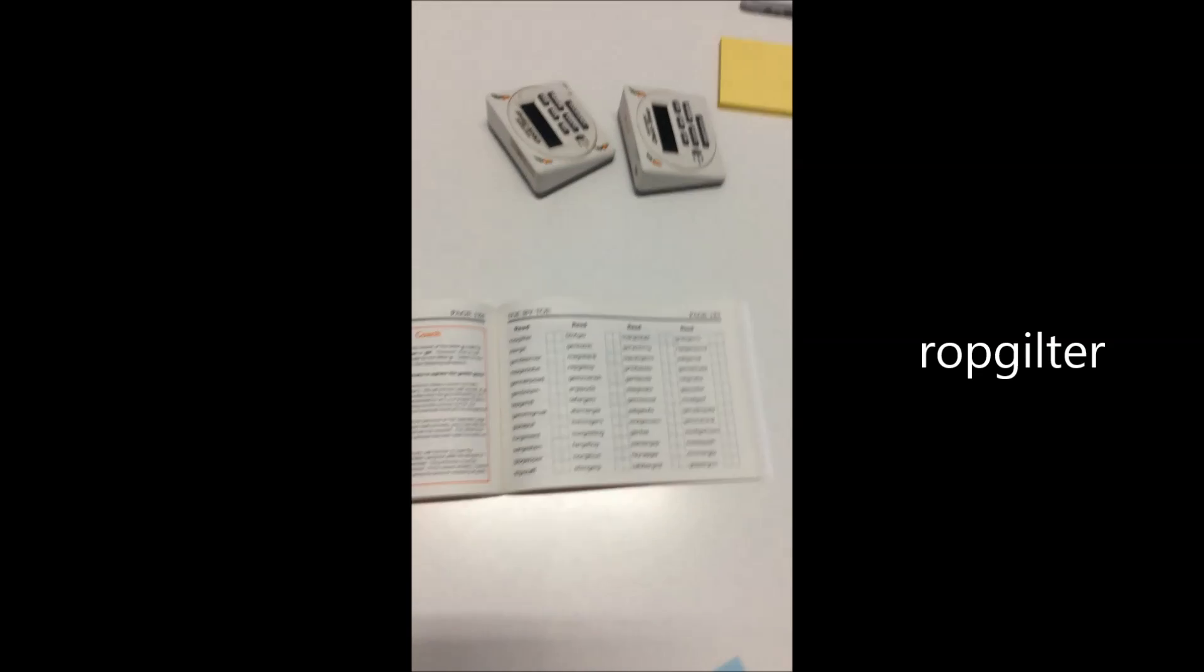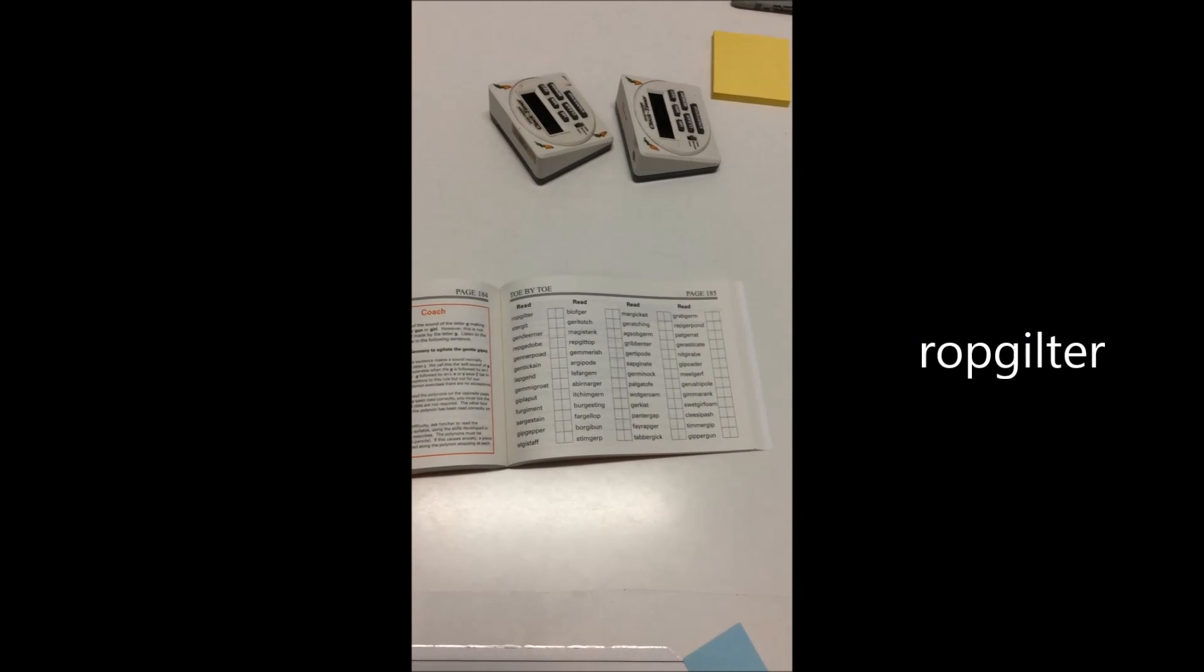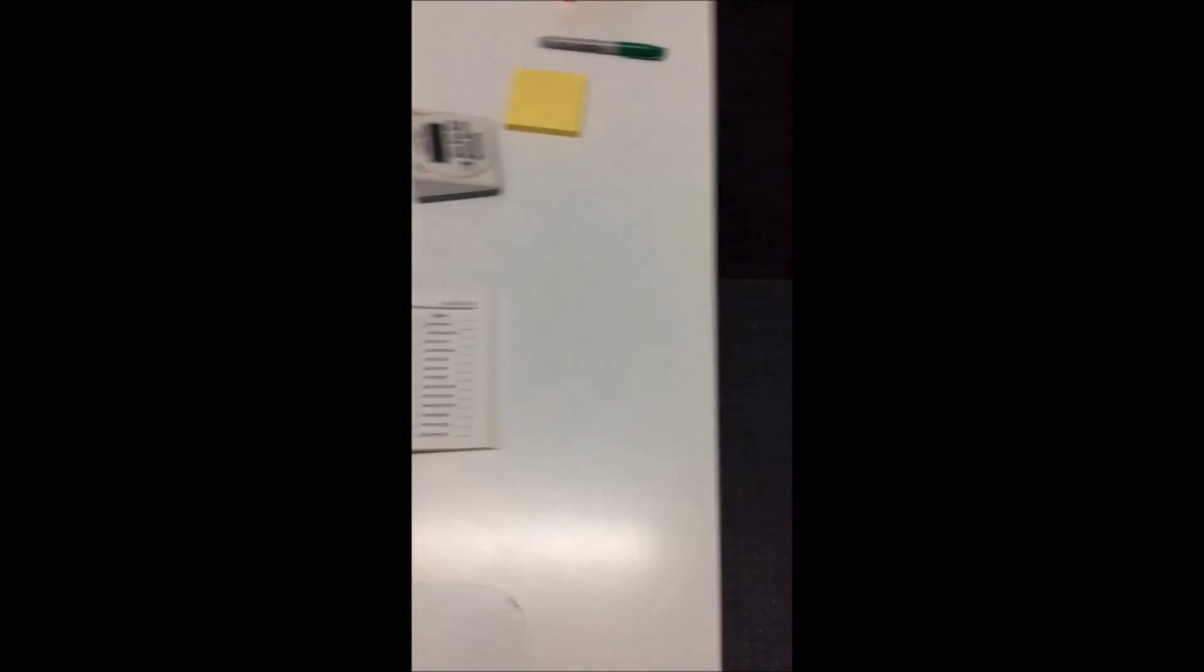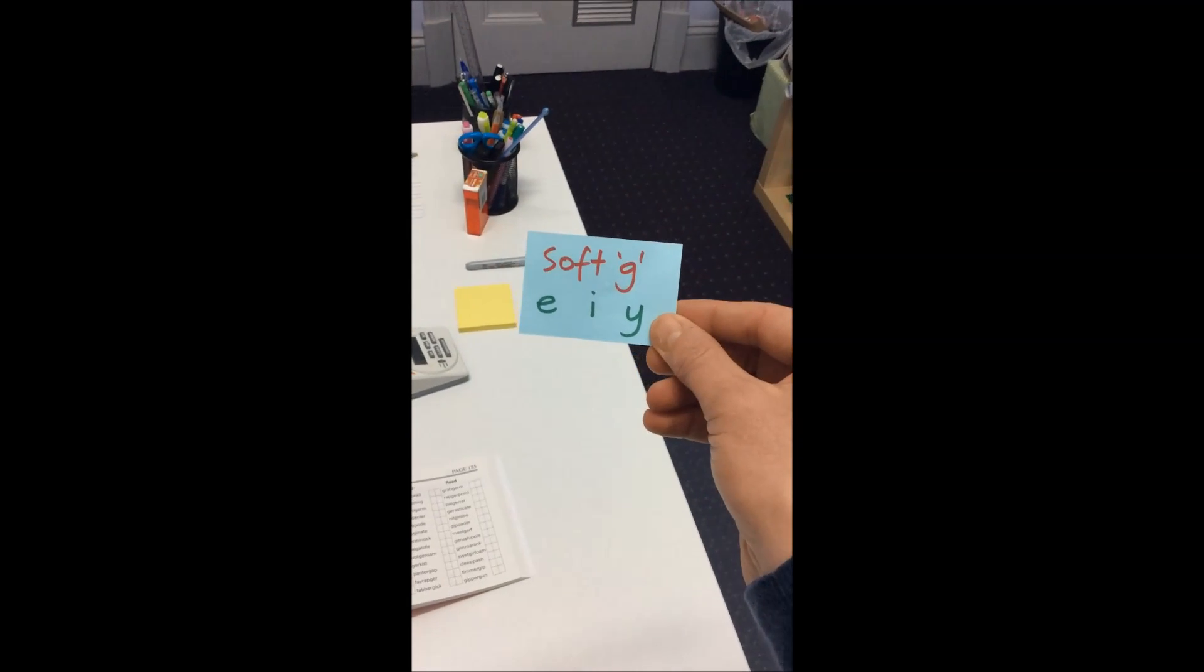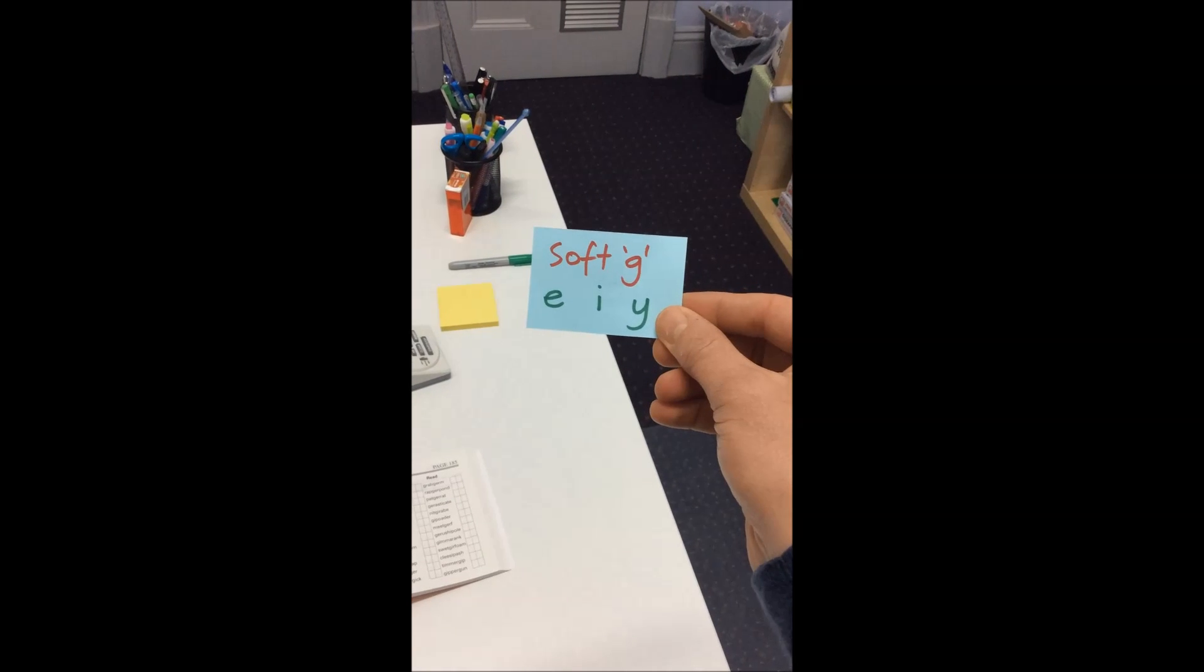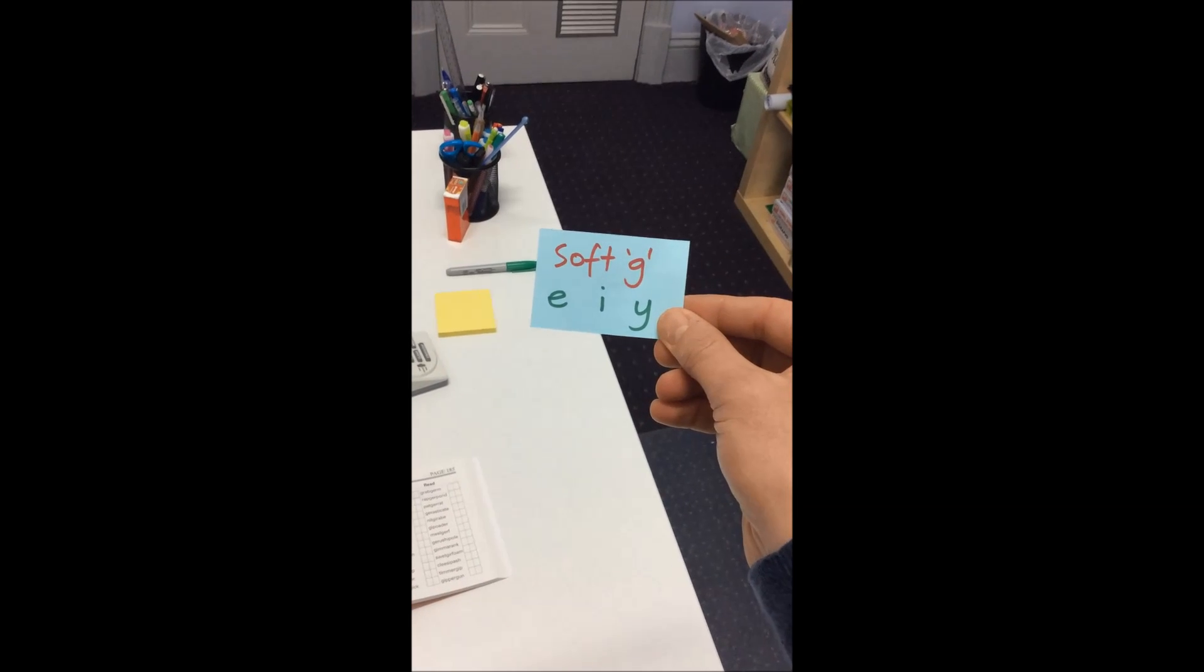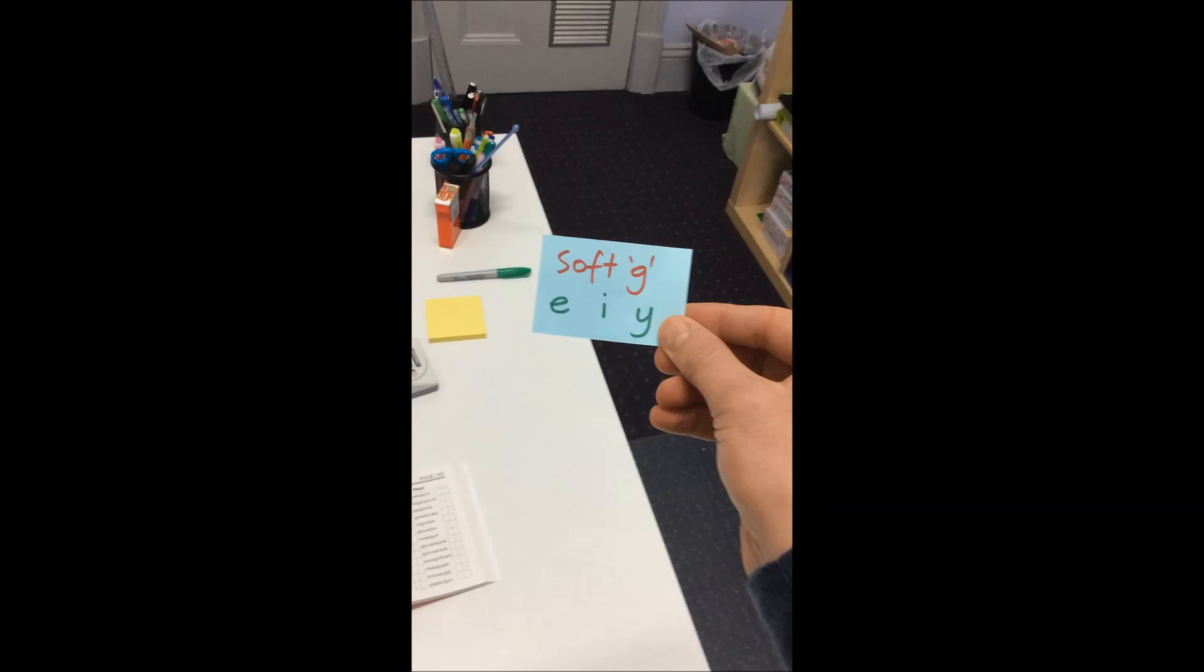So Charlie and I talked about how when you see a G in front of the letters E, I, or Y, it's going to make the sound J. This was the new concept that we're working with and holding in memory. In front of the G, in front of an E, an I, or a Y, the letter G makes the sound J instead of making the sound G.